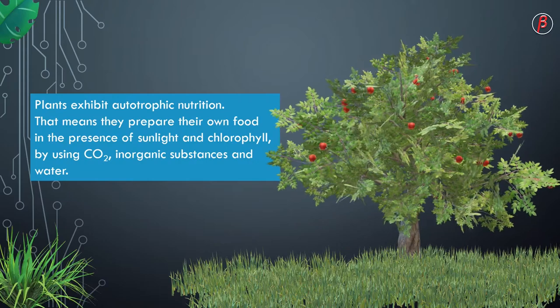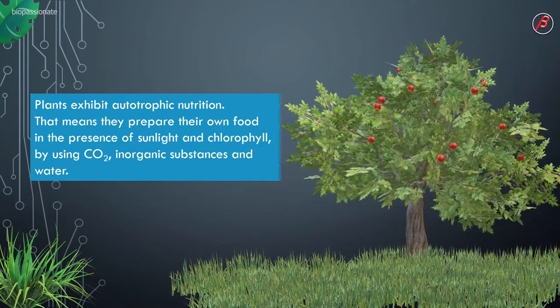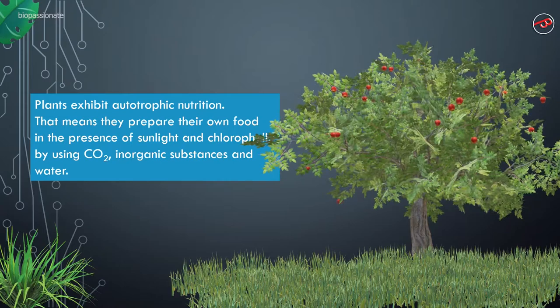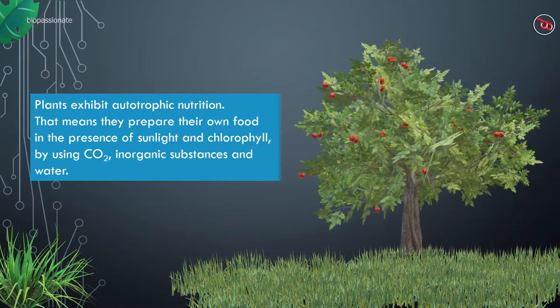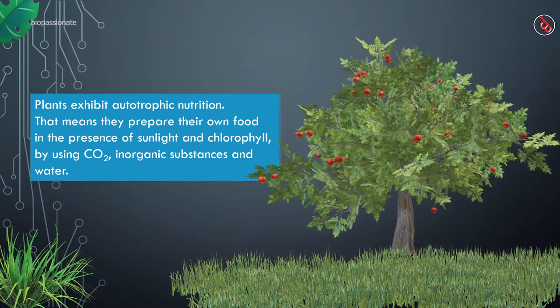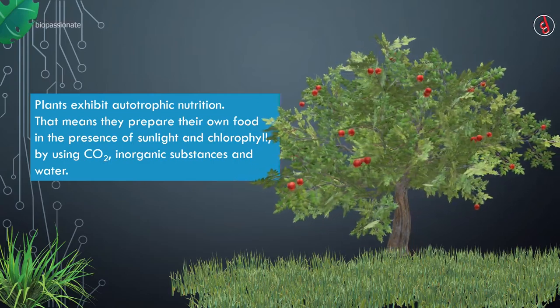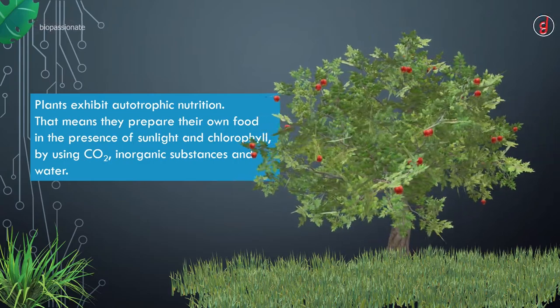You know that plants are autotrophs. That means plants exhibit autotrophic nutrition. They prepare their own food in the presence of sunlight and chlorophyll by using carbon dioxide from the atmosphere, inorganic substances and water from the soil.